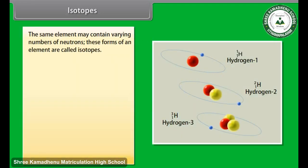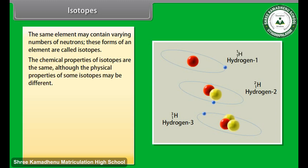Isotopes. The same element may contain varying numbers of neutrons. These forms of an element are called isotopes. The chemical properties of isotopes are the same, although the physical properties of some isotopes may be different.